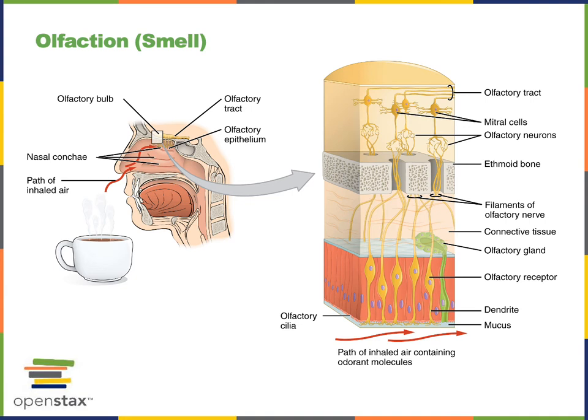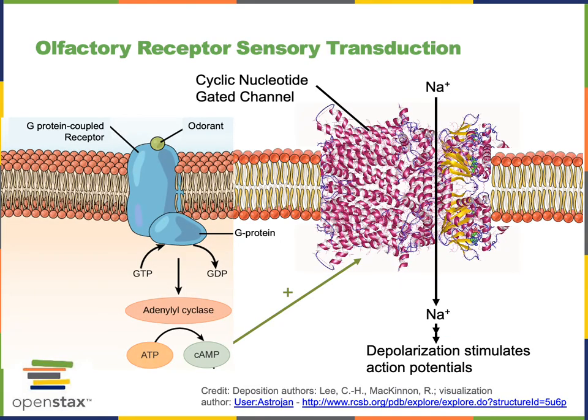There are approximately a thousand distinct types of olfactory receptors that each express a different G protein coupled receptor. The olfactory receptor sensory transduction mechanism involves the odorant activating a G protein coupled receptor, which will then stimulate the enzyme adenylyl cyclase to produce the second messenger molecule cyclic AMP.